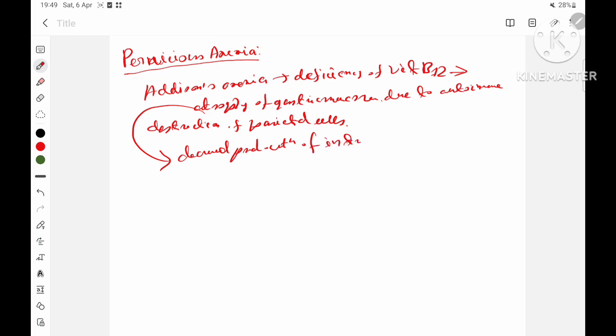This intrinsic factor, known as intrinsic factor of Castle, is necessary for the absorption of vitamin B12. Due to the deficiency, the absorption of vitamin B12 is impaired, and vitamin B12 is one of the maturation factors of RBCs.